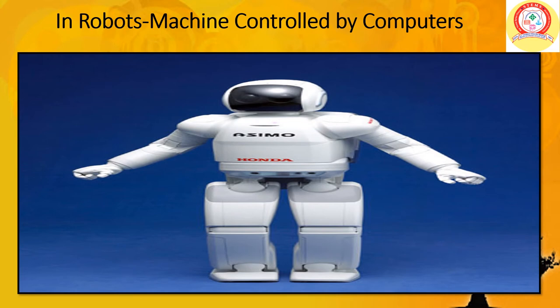Robots are machines controlled by computers. They can also be made to look like humans. Robots can do many tasks that humans cannot do — they can handle chemicals that are too dangerous for humans to touch. Robots can go to dangerous places such as deep underwater to search for shipwrecks or mineral deposits. Robots can also go inside active volcanoes and help explore other planets.